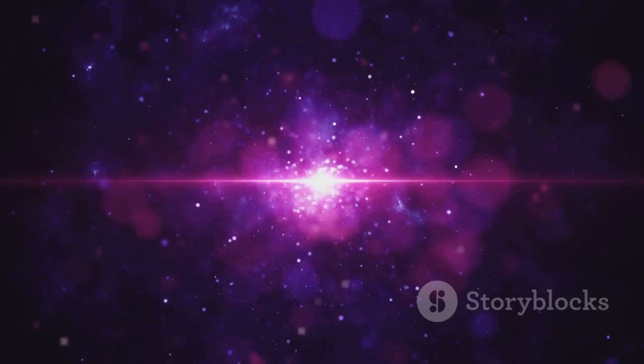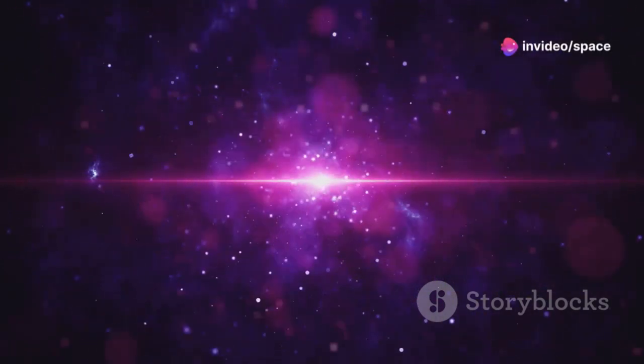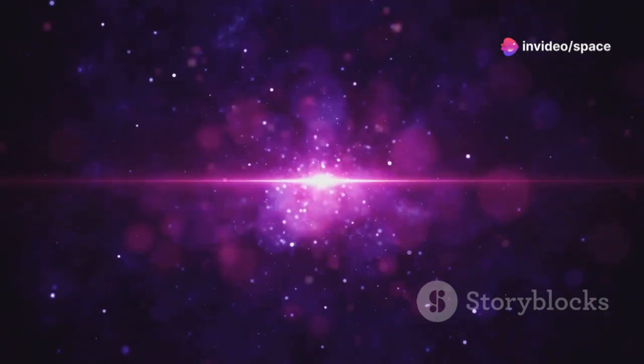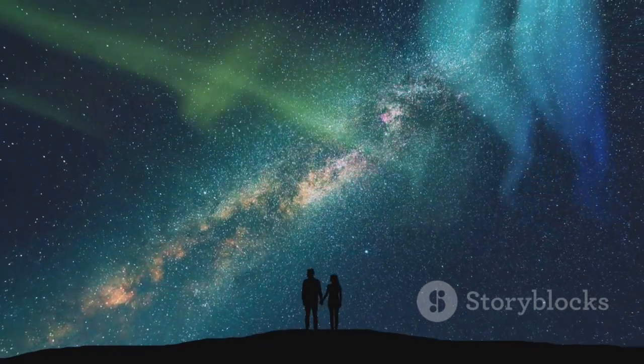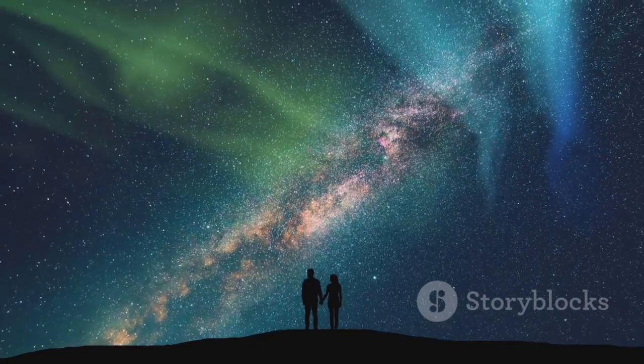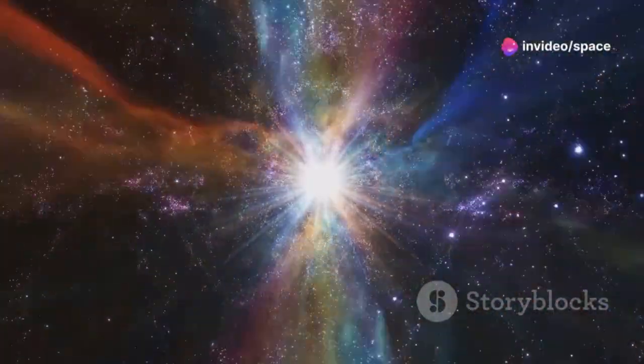Its outer layers are so extended that they are relatively cool, giving the star its distinctive red hue. Despite this, it radiates an incredible amount of energy. It shines with the luminosity of over 100,000 suns. This means that Betelgeuse emits more light and energy than our sun by a factor of 100,000, making it one of the most luminous stars in our galaxy.